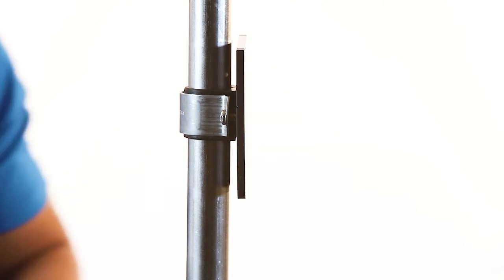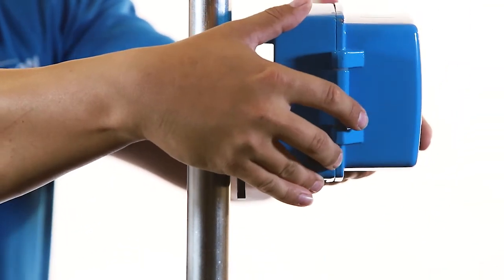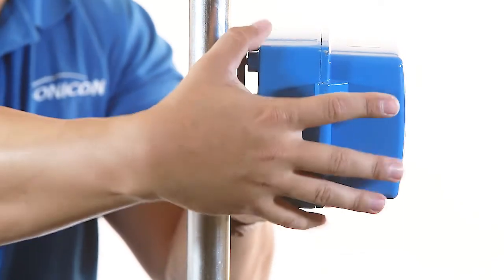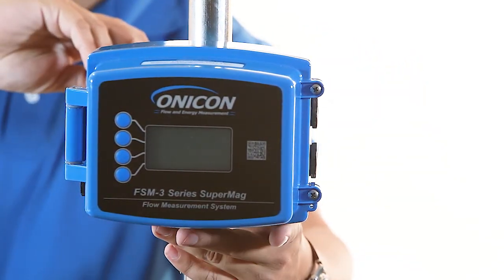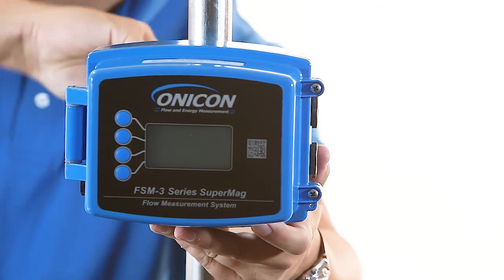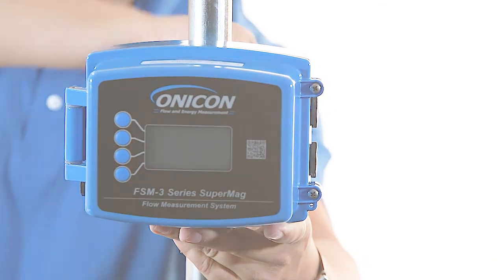Insert the four screws provided into the back of the transmitter enclosure. Move the transmitter enclosure into position on the mounting plate, fully seated in the mounting slots. Align the transmitter enclosure on the hot tap adapter before tightening the clamping screws.